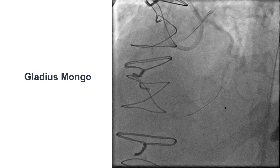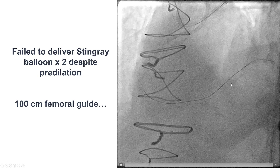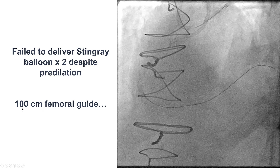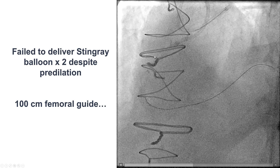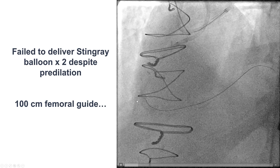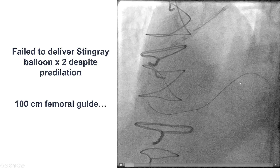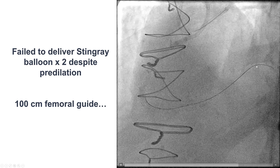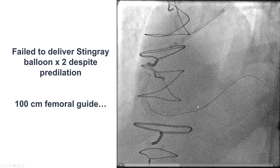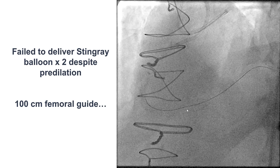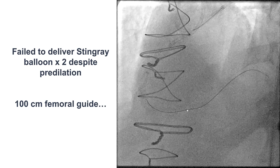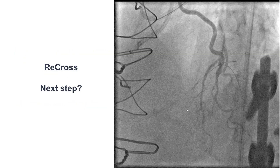A Gladius Mongo guide wire was knuckled and advanced laterally. For technical reasons, we were given a 100 centimeter femoral guide AL1 for the right, which became a problem — the re-entry zone we were trying to reach was very far from the tip of the guide catheter. We had difficulty reaching it and almost ran out of catheter length. However, the actual problem was crossing: we were unable to advance equipment through this very diseased and heavily calcified right coronary artery.